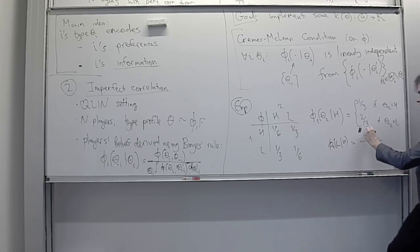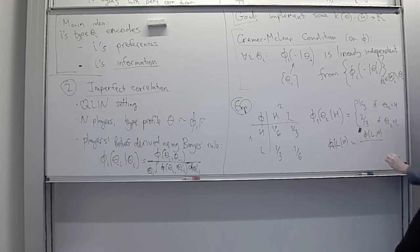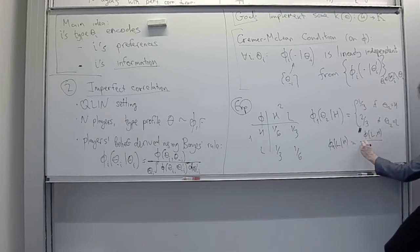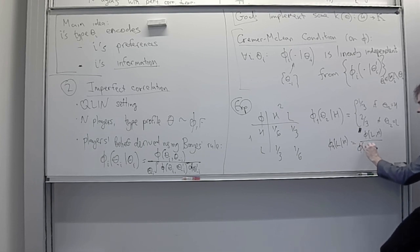Why did we derive these beliefs? We need to check whether they satisfy the Cramér-McLean condition. In particular, is the vector of beliefs (1/3, 2/3) for player one of type H linearly independent of the collection of belief vectors for all other types of player one — basically, is this vector linearly independent of the vector (2/3, 1/3)?